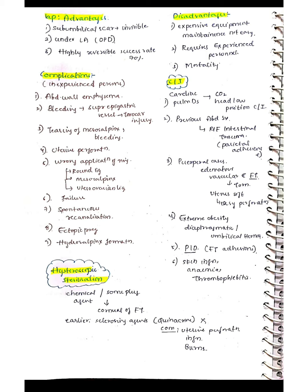Contraindications for laparoscopic sterilization include cardiac and pulmonary diseases, as CO2 and the head-low position are contraindicated. Previous abdominal surgeries risk intestinal trauma and parietal adhesions. Puerperal cases have edematous, vascular fallopian tubes prone to tearing and soft uterus prone to perforation. Other contraindications are extreme obesity, diaphragmatic or umbilical hernia, PID (where fallopian tube adhesions prevent clear visualization), skin infection, anemia, and thrombophlebitis.